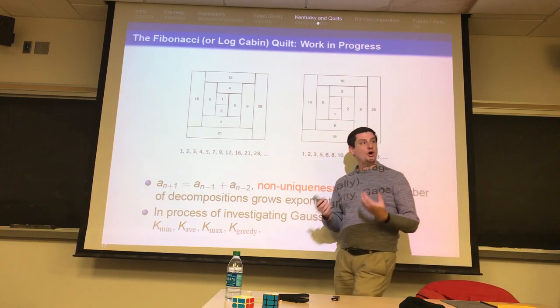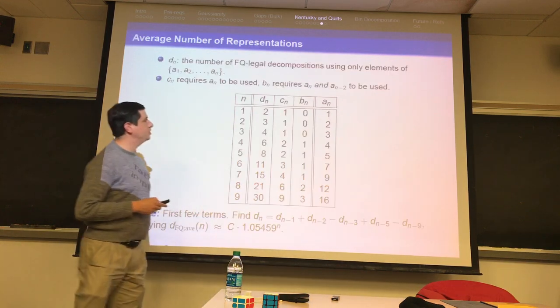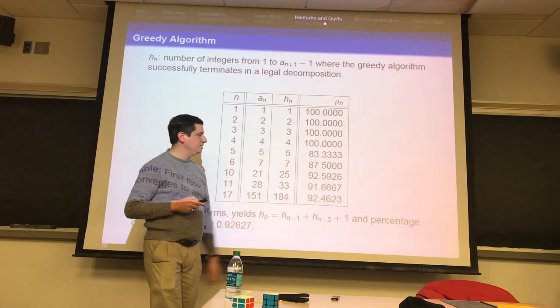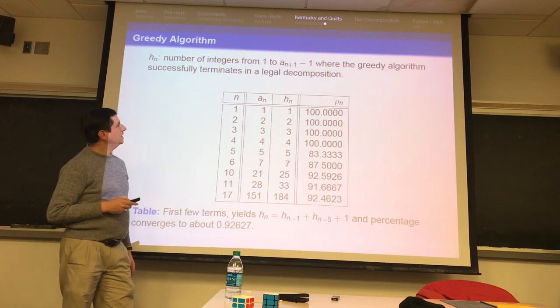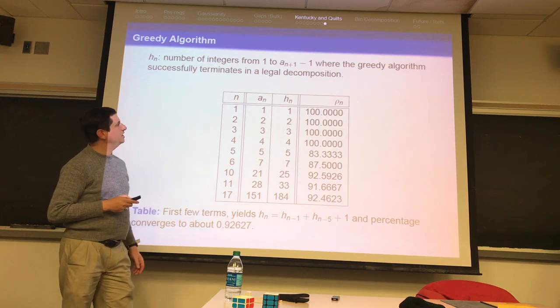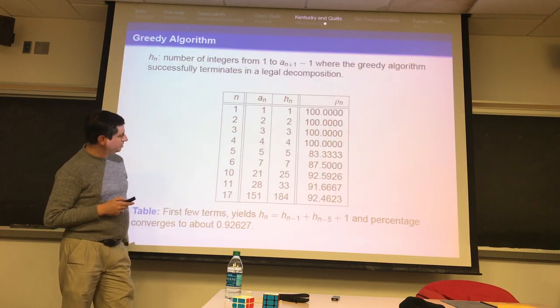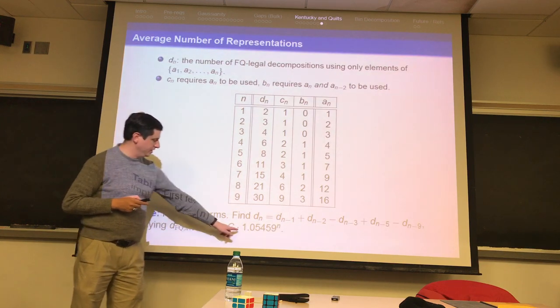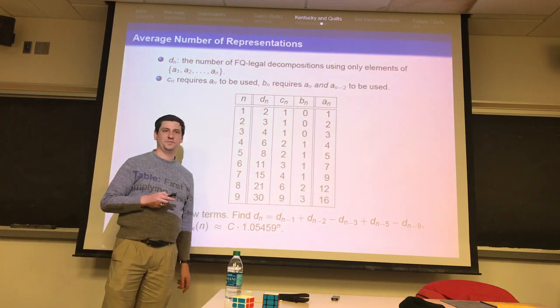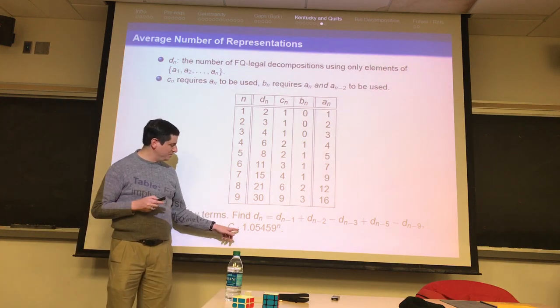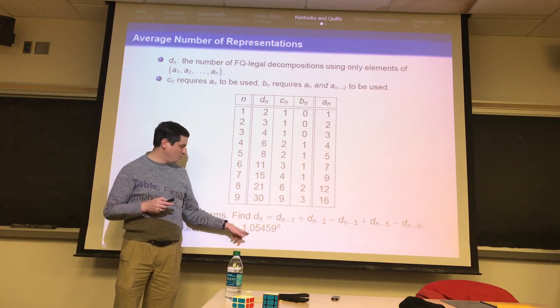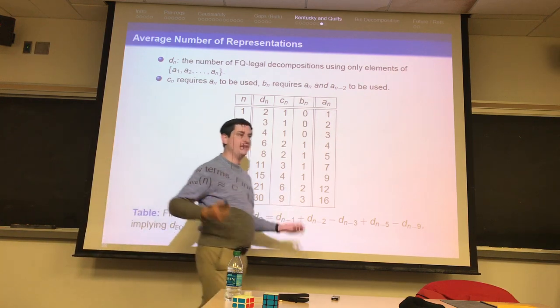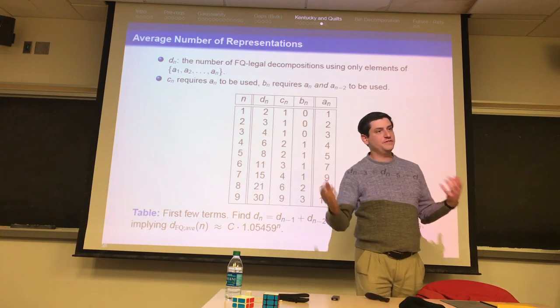And then you can start to ask how often can you represent numbers. And there's a lot of great things you can do. Set up a multi-recurrence relation. And we're able to show that it's approximately 92% of numbers where the greedy algorithm will decompose in a legal decomposition. The number of decompositions is growing exponentially. So it's like 1.05459 approximately to the end. So it's exponentially growing on average how many decompositions you have. So there's a lot of stuff you can do here.